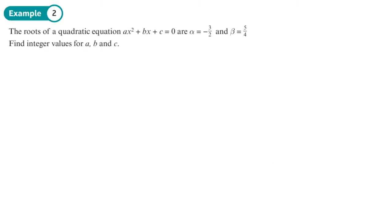The roots of an equation are here. Find integer values for a, b, and c. We're going to use a little trick to make this easier. The problem is that I can write an expression for alpha plus beta, which I know is equal to negative b over a, and for alpha times beta, which is c over a. But I'm only going to get two equations with three unknowns.